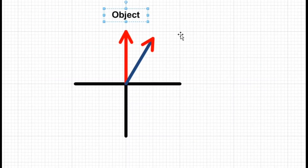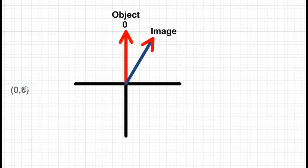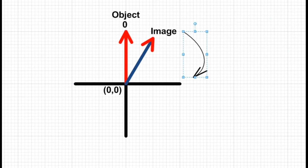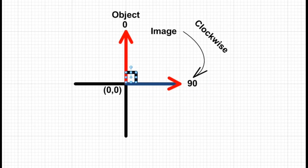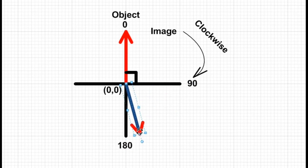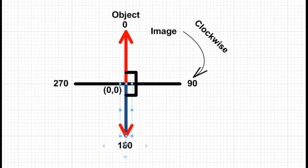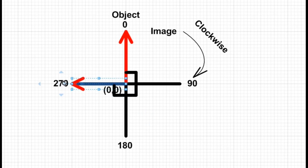In another animation, there is an object in red color and its image in blue color. The center of rotation is 0,0. The image is formed by rotating in the clockwise direction covering 90 degrees, then further clockwise to cover 180 degrees, then again to cover 270 degrees clockwise. If we rotate the image further, it will reach 0 degrees and cover the whole angle of 360 degrees.